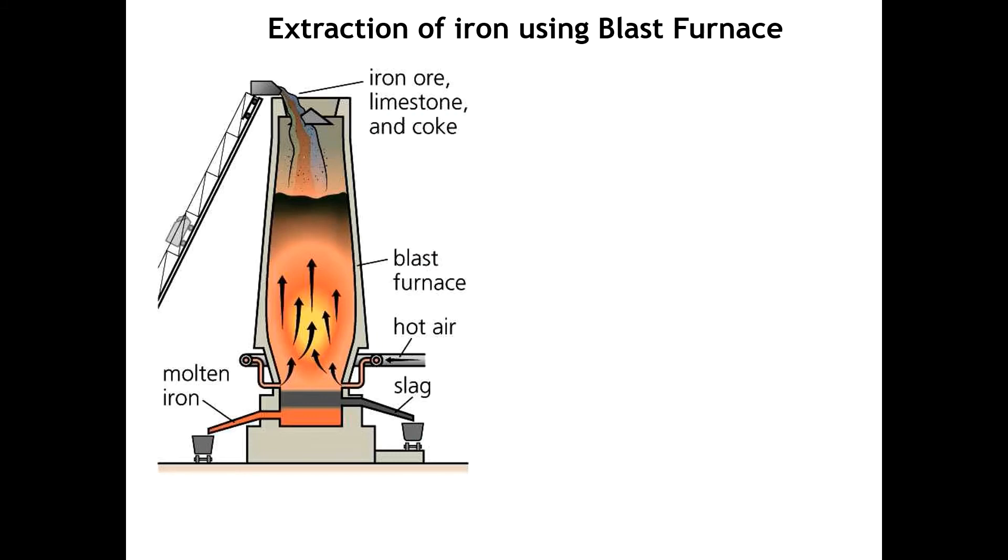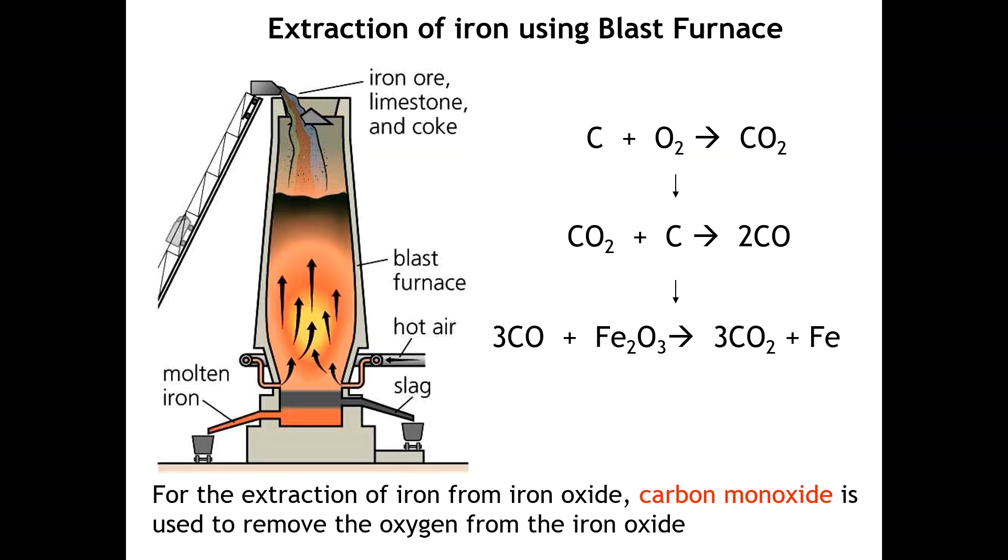Iron can be extracted from its ore in industry using a process called the blast furnace. The blast furnace involves these materials: iron ore, limestone, and a form of carbon called coke. This all gets fed into a big hot furnace with lots of oxygen going in, and what happens is the carbon in there reacts with the oxygen to form CO2. The CO2 then reacts with a bit more carbon to form carbon monoxide. The carbon monoxide will react with iron oxide to form iron metal, which goes down into here as molten iron, plus CO2. The difference between the method that I used compared to the method used in industry is that carbon monoxide is used to snatch away the oxygen off the iron.